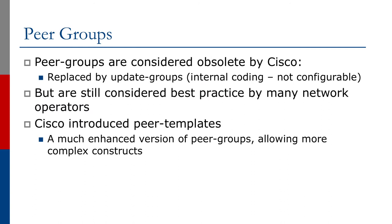Peer Groups are generally considered obsolete by many because they've been replaced by update groups, which is an internal coding improvement. But it's still considered best practice by many network operators, and indeed Cisco has introduced a concept called Peer Templates, which is a much enhanced version of Peer Groups allowing much more complex constructs. Peer Groups are still widely used by many network operators.